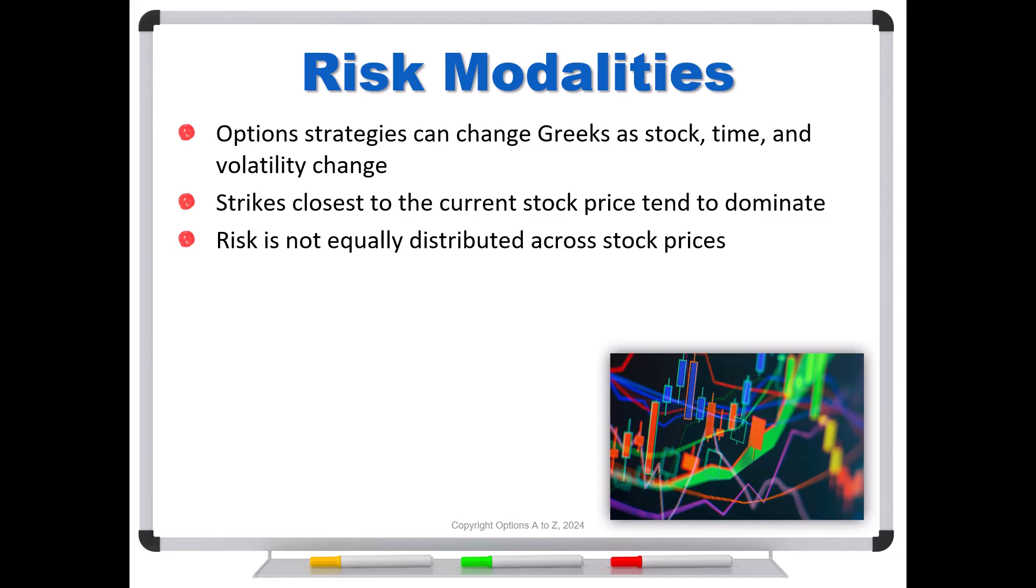Now, some traders prefer to talk about or think about risk modalities as the number of sign changes. In other words, if we have positive delta, and we sometime later switch to negative delta, that is one sign change. We have two signs, positive and negative, but we've only changed once. So that's just another way of thinking about risk modalities. And it'll be a lot more clear as we go through some examples.